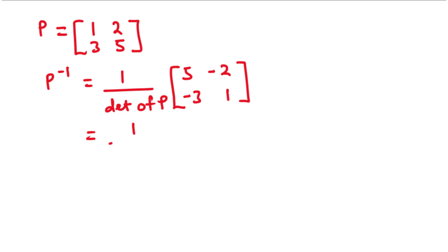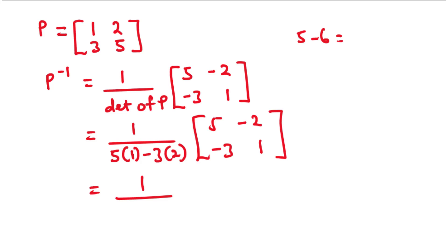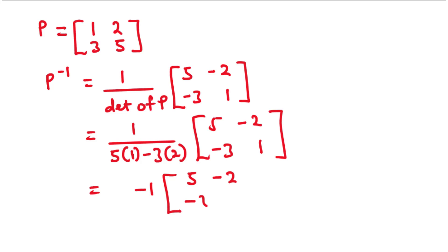Now let's find the determinant of matrix P. We multiply 5 by 1, minus 3 times 2. Simplifying: 5 times 1 is 5, and 3 times 2 is 6. So 5 minus 6 is negative 1. The determinant of P is negative 1.